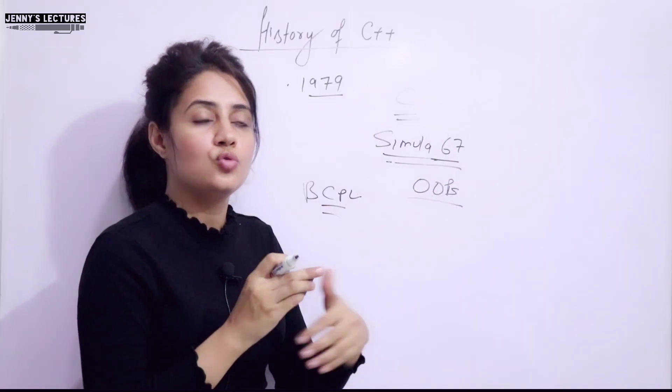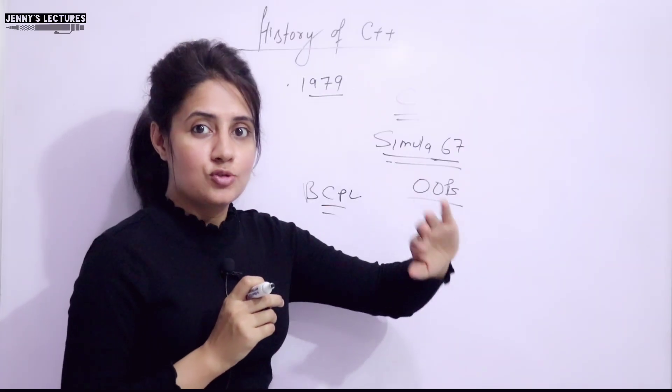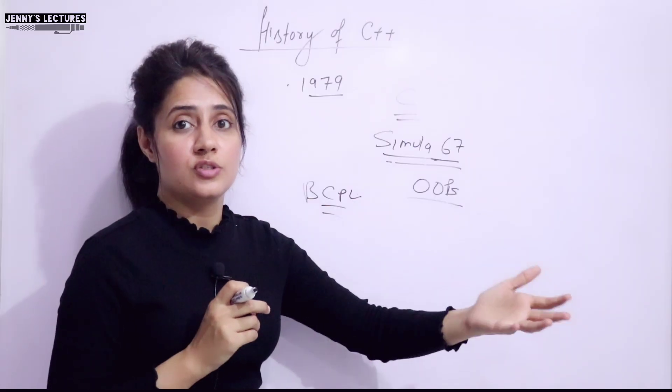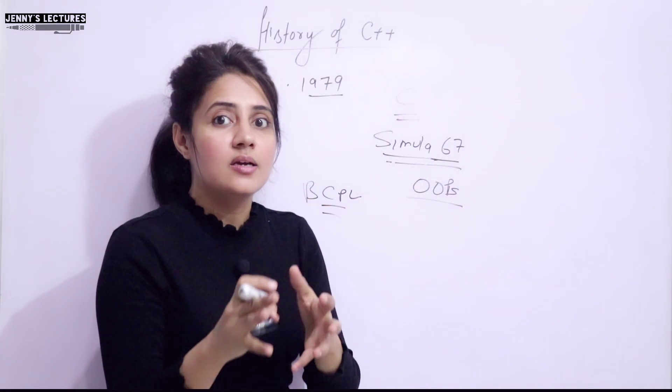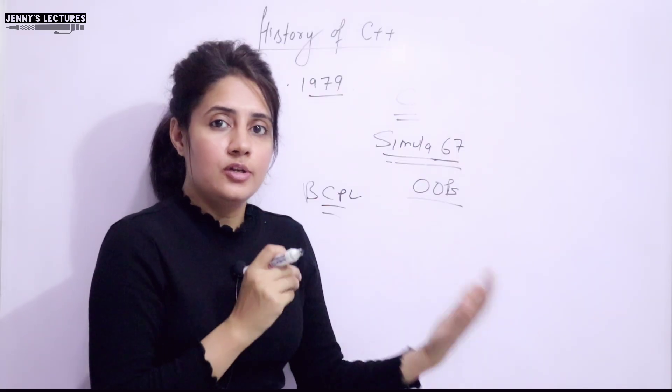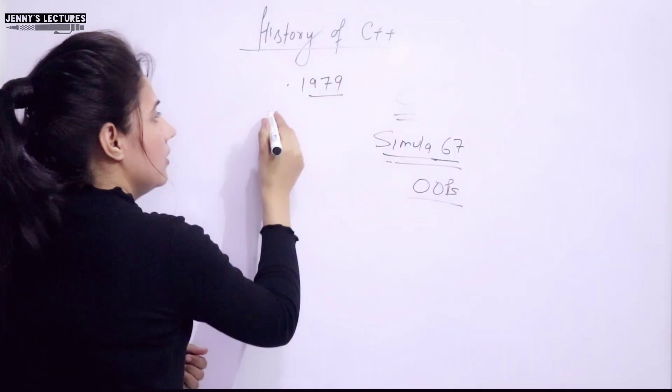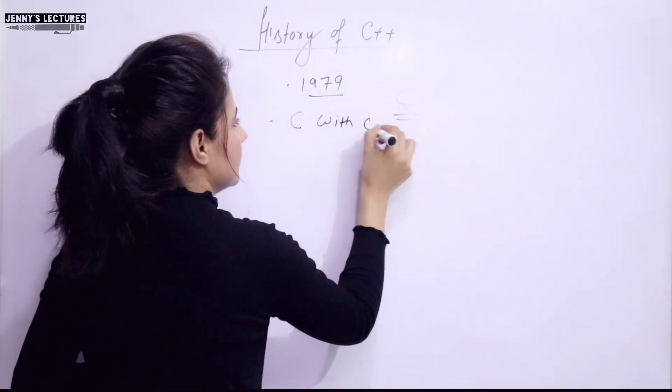He thought to make a better C language. So that's why C++ is known as extension of C or superset of C. All the features, the basic functionalities of C was as it is. Only he added some new concept, OOPS concept. So the first language, it was not known as C++. It was known as C with classes.